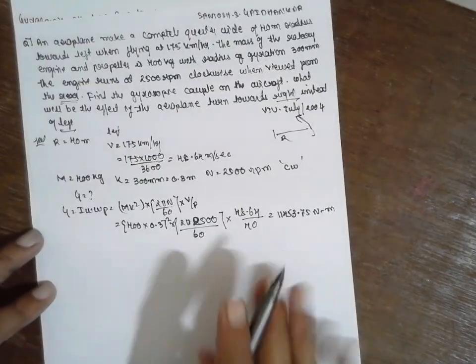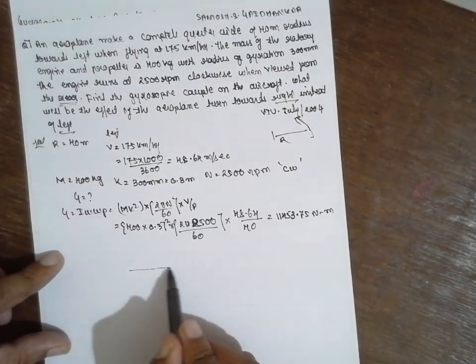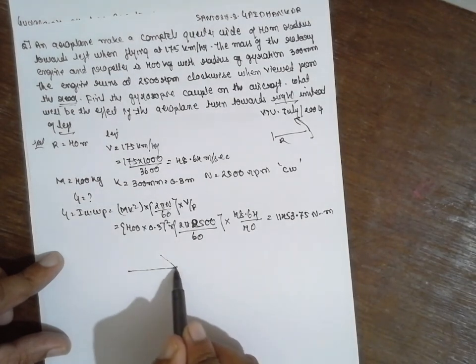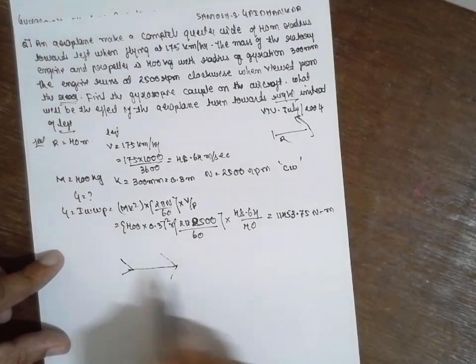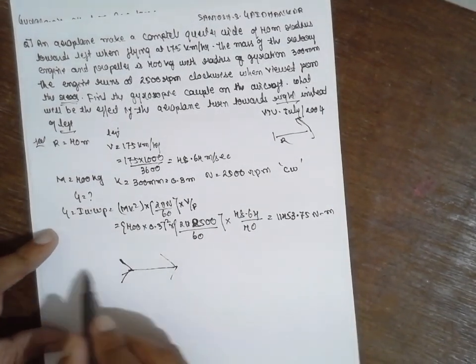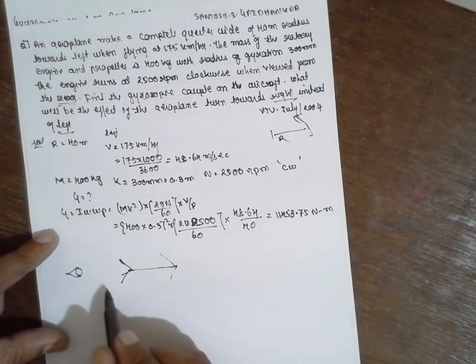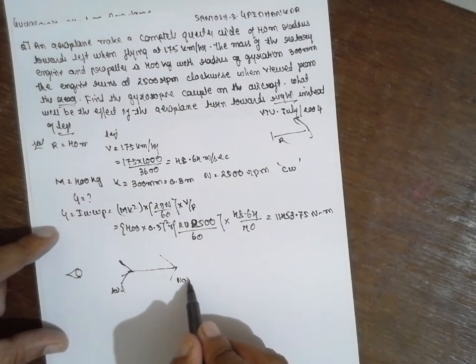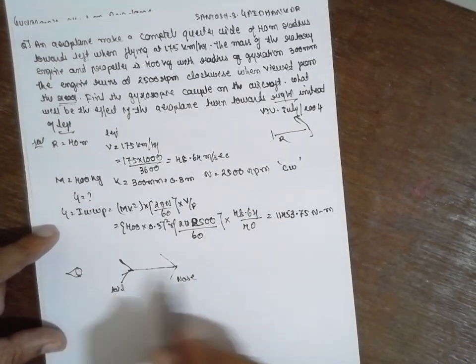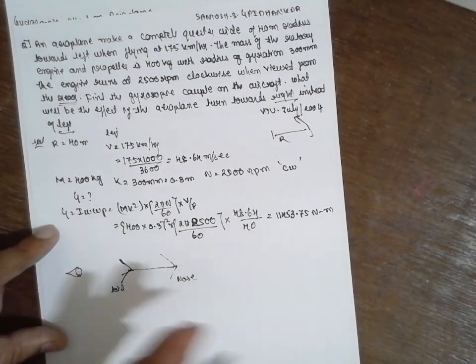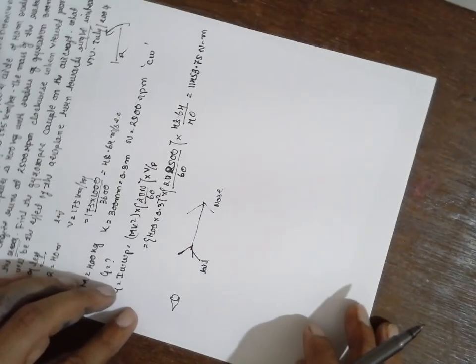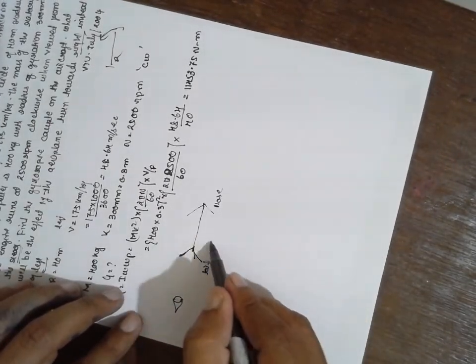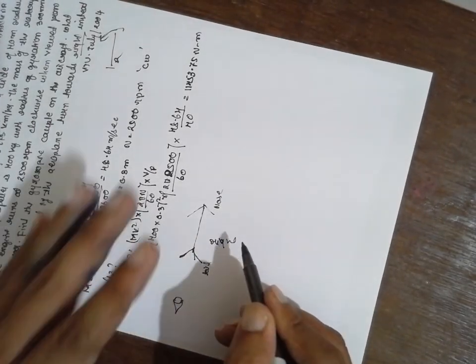Now the aeroplane they have given. This is the aeroplane as per the data. I am just taking the rough diagram of the aeroplane. This is the rear end. This is the tail. This is nose viewed from the rear end. As per the direction here, I will rotate here. This is my right hand, I will write right here. And this is left hand, I will write left here.